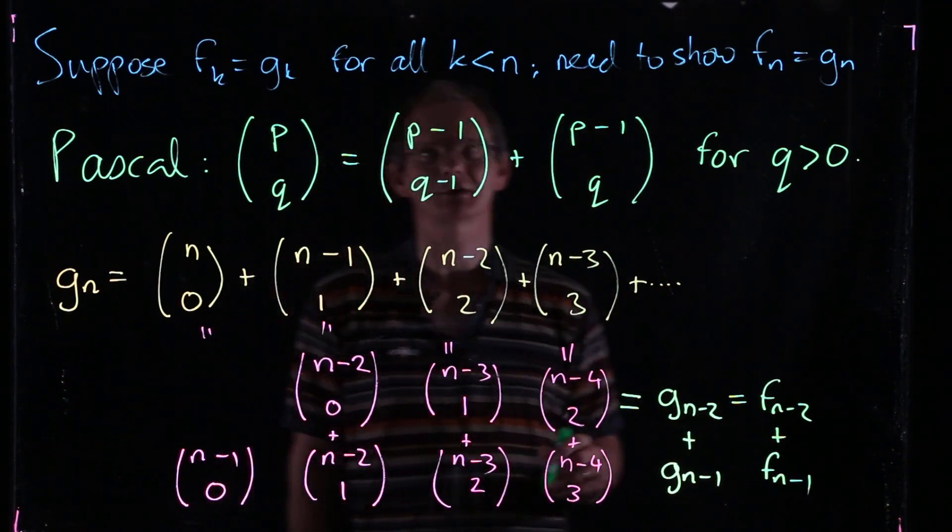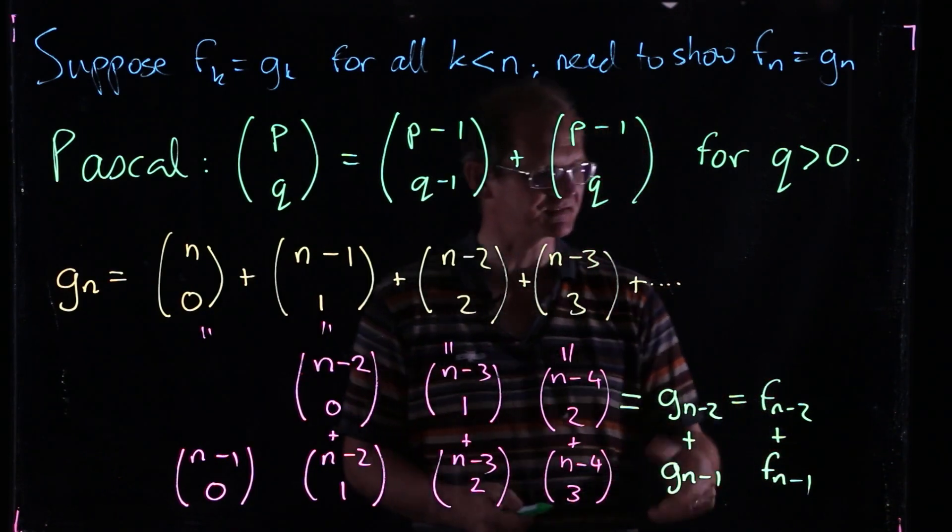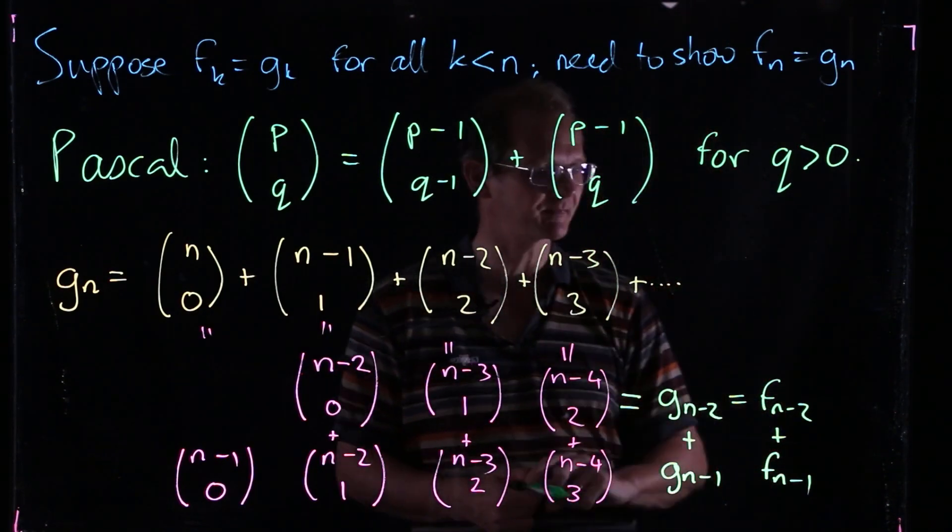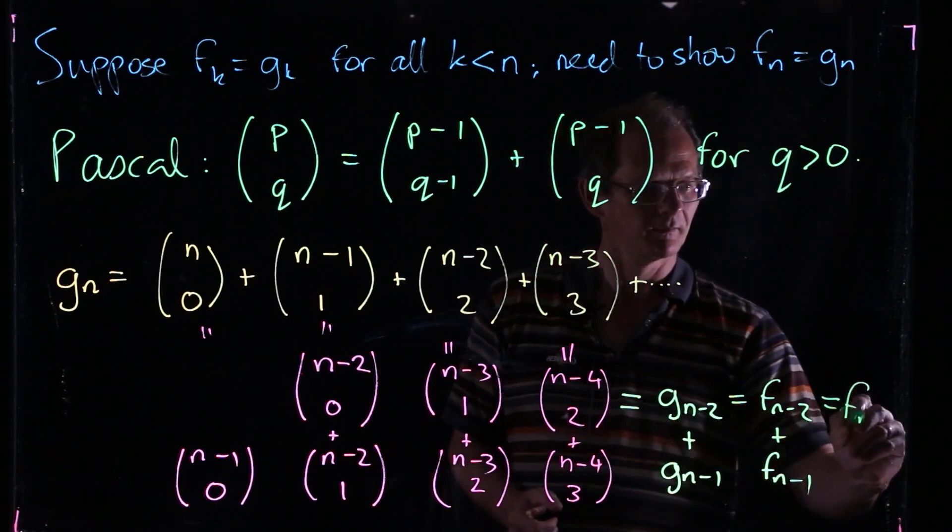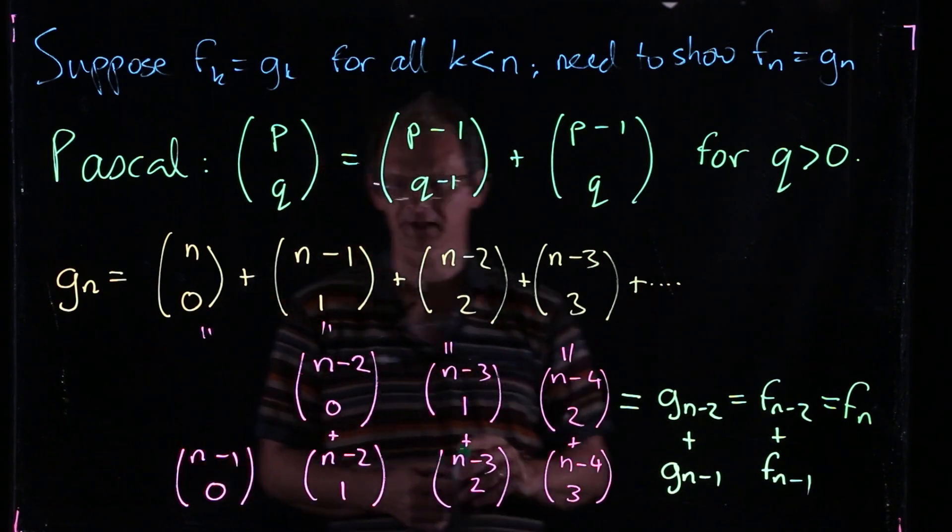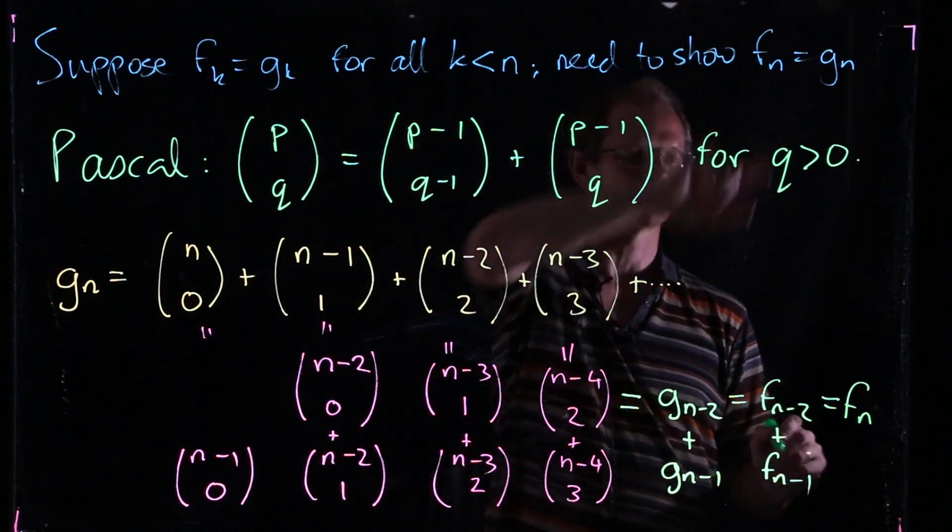But now we just have to remember the definition of these Fibonacci numbers. The Fibonacci number Fn is just defined to be the sum of the previous two Fibonacci numbers, Fn-2 and Fn-1. So what we've got here is Fn. So now what we've proved is that Gn is the same as Fn, which is what we wanted to prove.